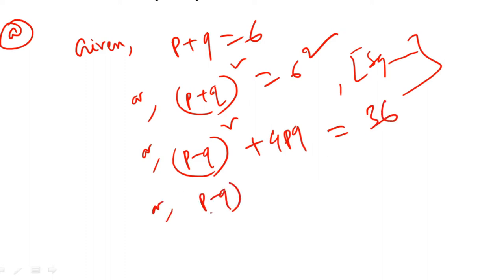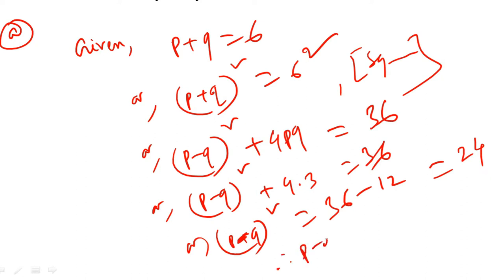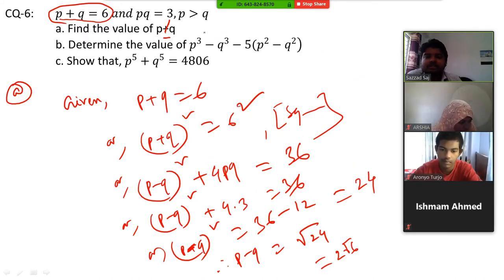Or P minus Q whole square equals 36 minus 4 times PQ. The value of PQ is already given — that is 3. So P minus Q whole square equals 36 minus 12, which gives 24. So P minus Q will be root over 24. You can simplify that: 4 into 6, that means 2 root 6. So the result is 2 root 6.